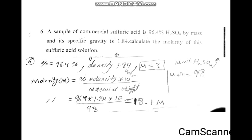This is the density. We will calculate the molarity using percent and density. We are going to use the formula for molarity. This is the percent and this is the density. We need to calculate the molarity: molarity equals percent multiplied by density, multiplied by 10, divided by molar weight.